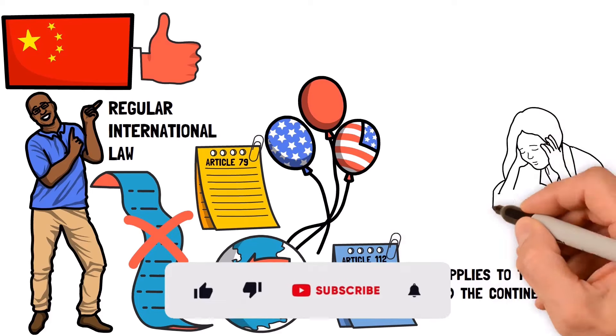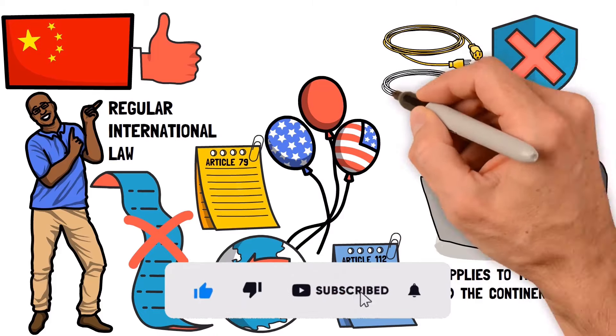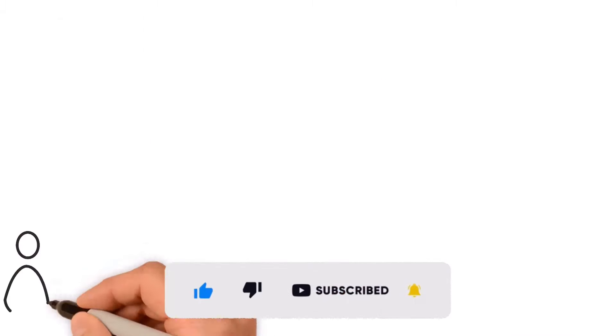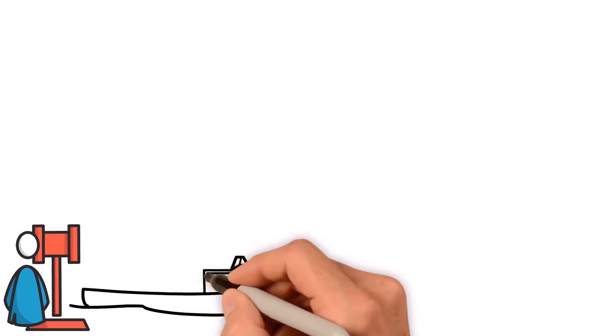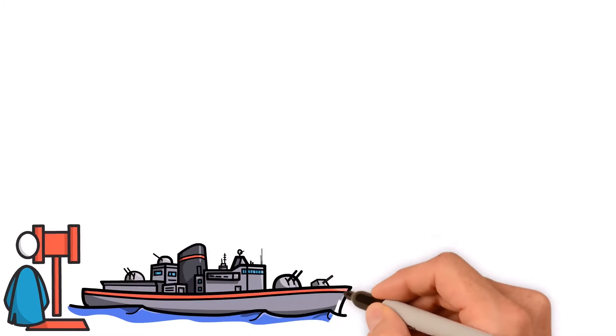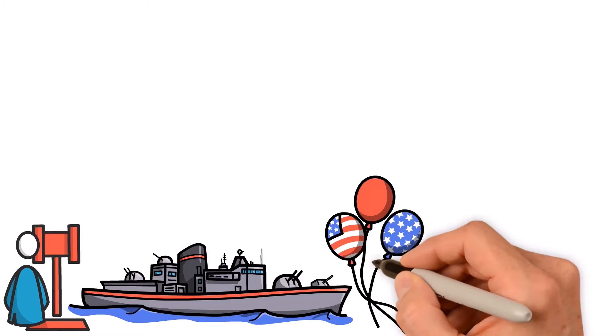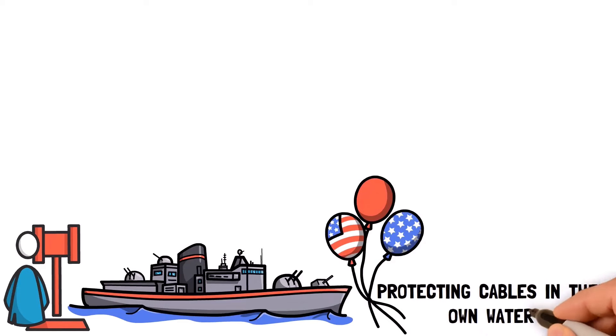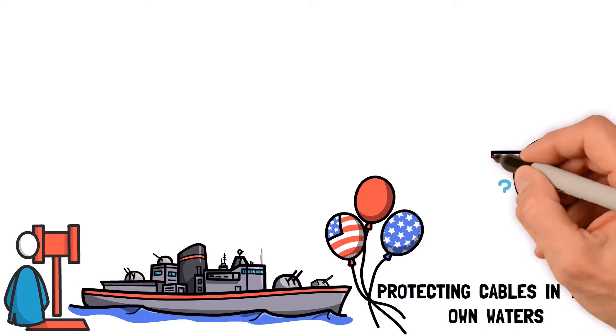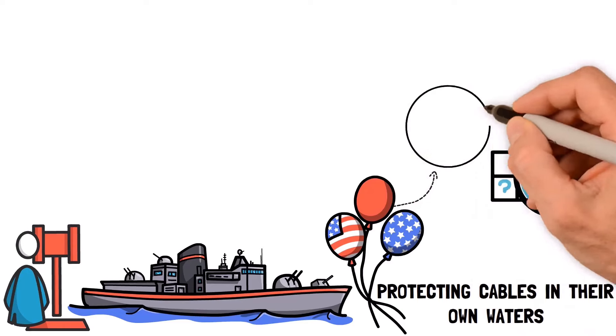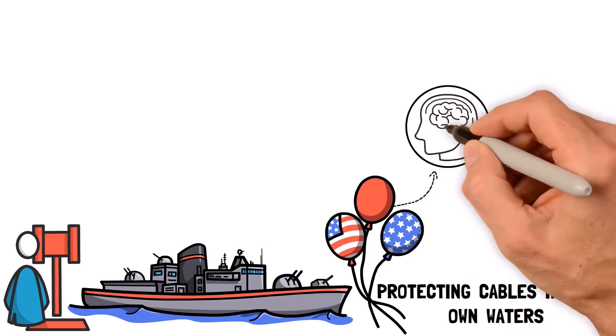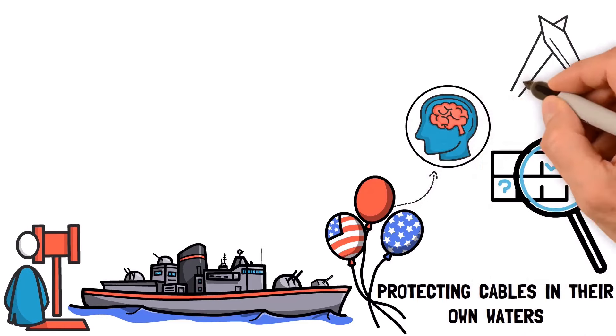But the Law of the Sea has some problems too. It doesn't have good protection for these cables. The convention doesn't say that it's against the law to attack cables in the open ocean and it doesn't make countries responsible for protecting cables in their own waters. If these problems aren't fixed all around the world, each country will have to figure out how to deal with them on their own. That could lead to conflicts.